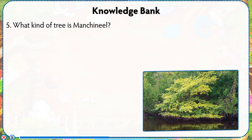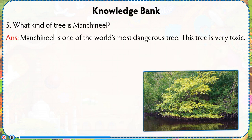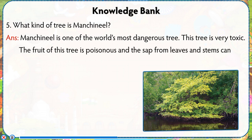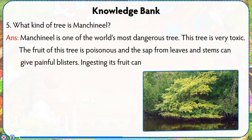What kind of tree is munchineel? Answer: Munchineel is one of the world's most dangerous trees. This tree is very toxic. The fruit of this tree is poisonous, and the sap from leaves and stems can give painful blisters.